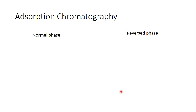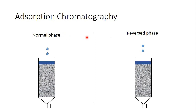Adsorption chromatography includes two phases: the normal phase and the reverse phase. You may have heard about reverse phase chromatography. Normal phase chromatography is exactly what I was speaking about — in both types we have the column, the stationary phase, the sample, and the mobile phase. In normal phase, the stationary phase is polar, which is the silica gel.